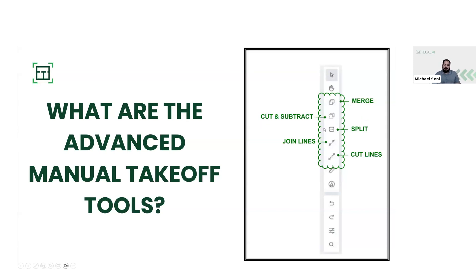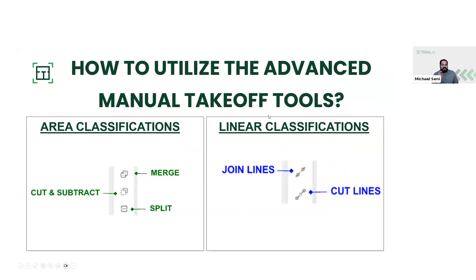There's merge, cut and subtract, split, join lines, and cut lines. Each of these tools have different ability based on area classifications and linear classification adjustments. Merge, cut and subtract, and split are all going to be affecting our area classifications.